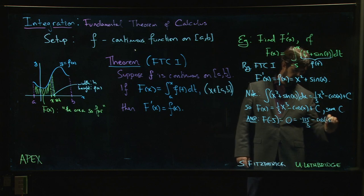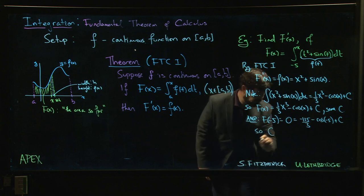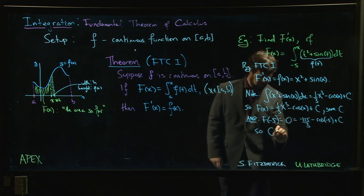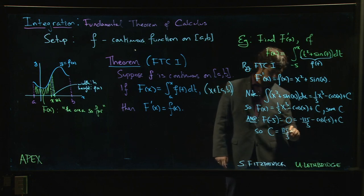So that constant, if you solve for c, is going to be 125 over three plus cosine of minus five.